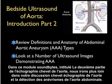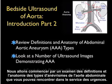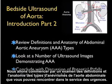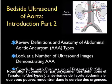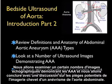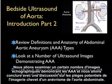We'll begin with a review of the definitions and the anatomy of the types of abdominal aortic aneurysms that you may encounter in the emergency department. We'll look at a number of ultrasound images demonstrating AAAs, and we'll conclude with a discussion of the potential pitfalls in bedside imaging of an abdominal aortic aneurysm.